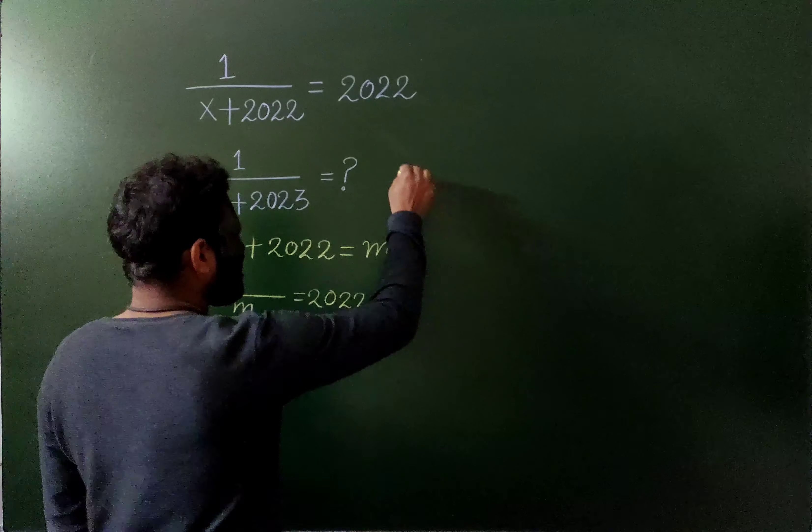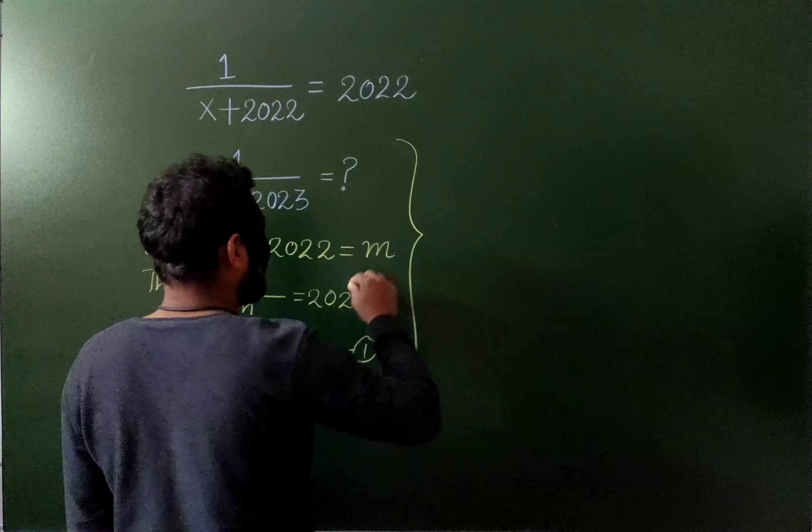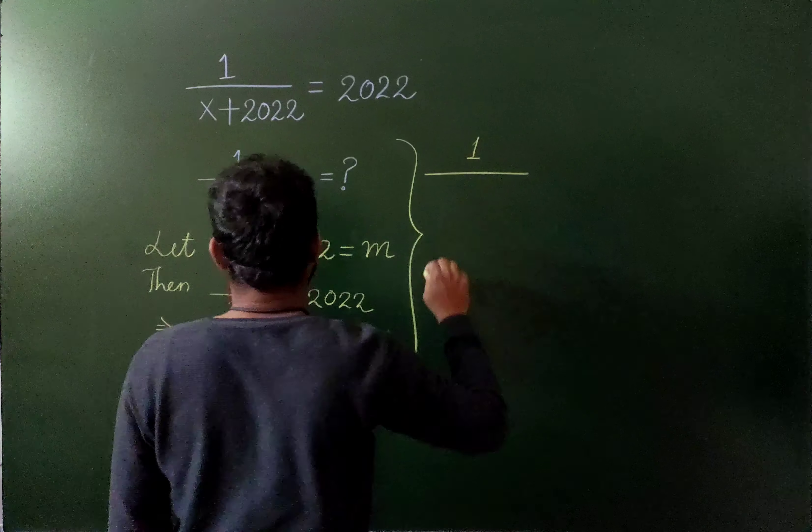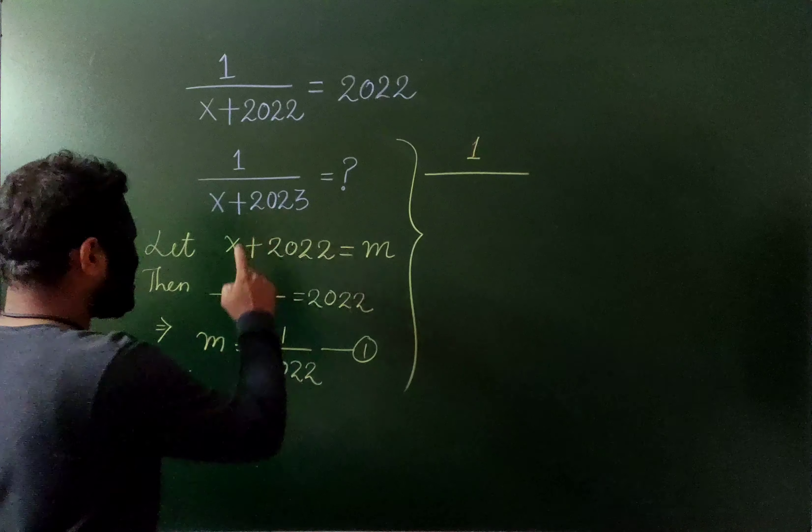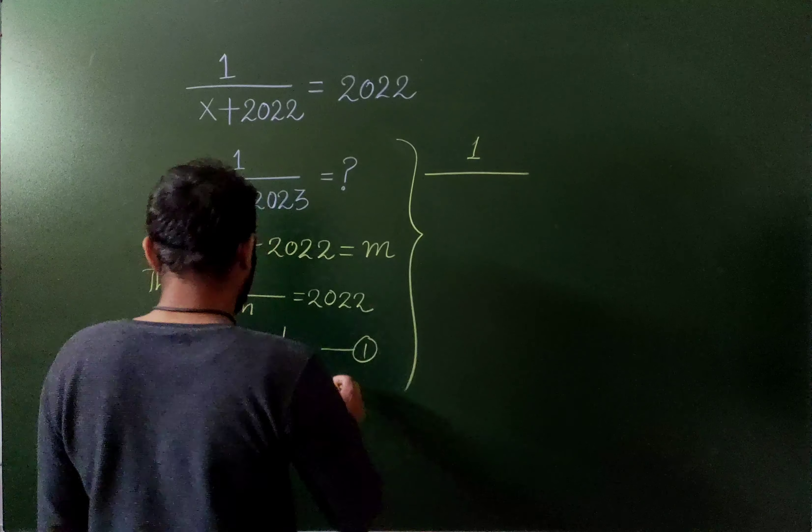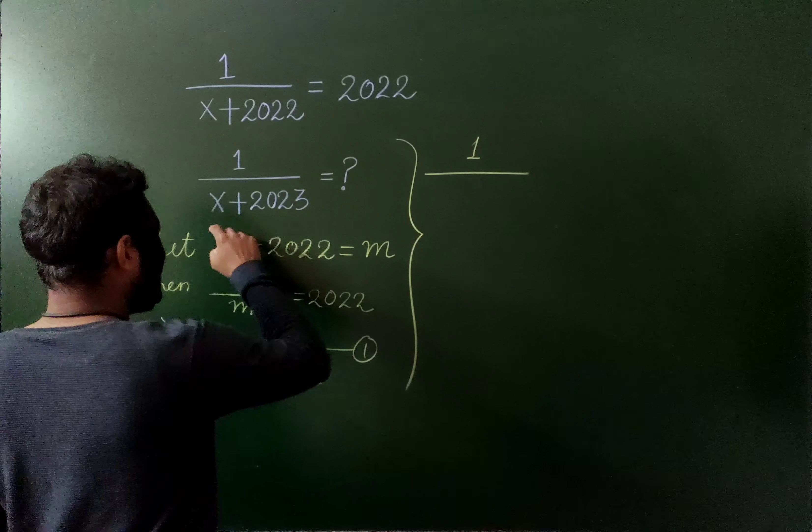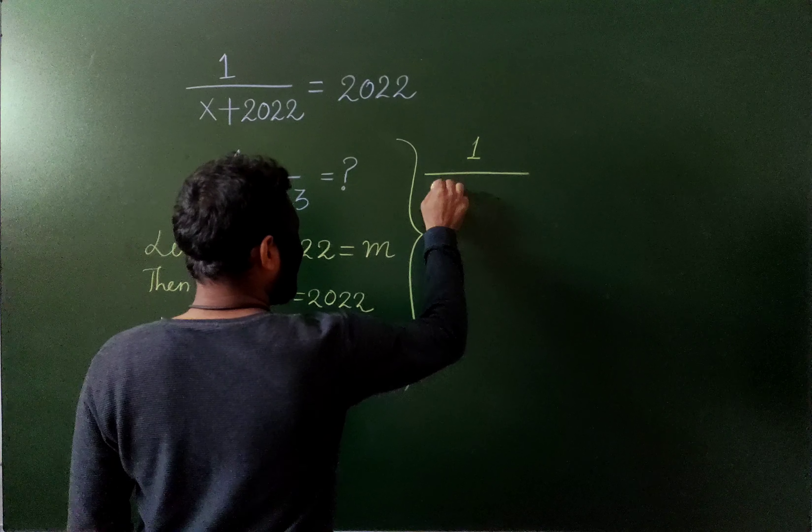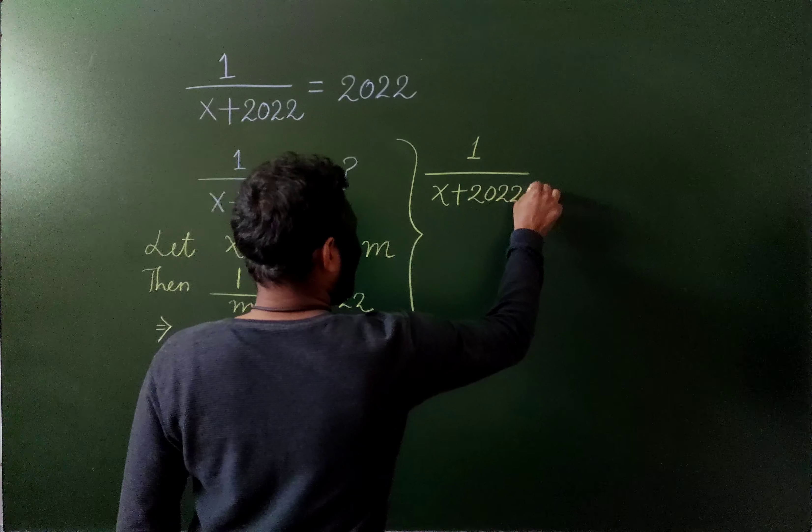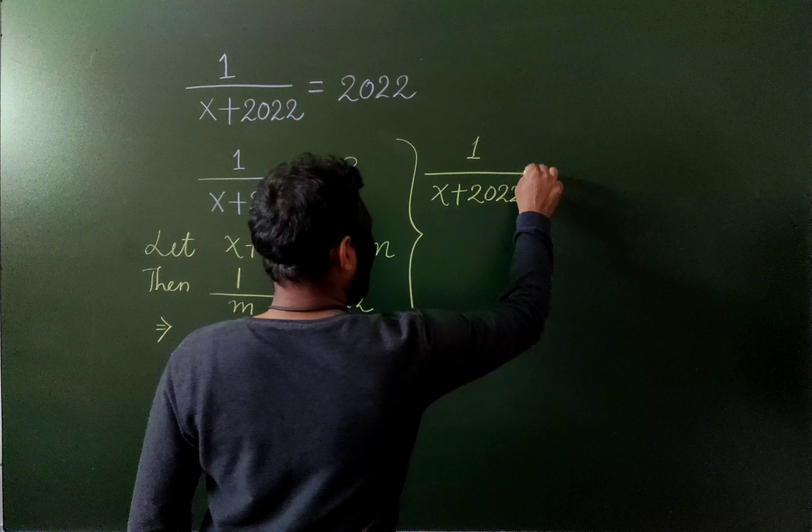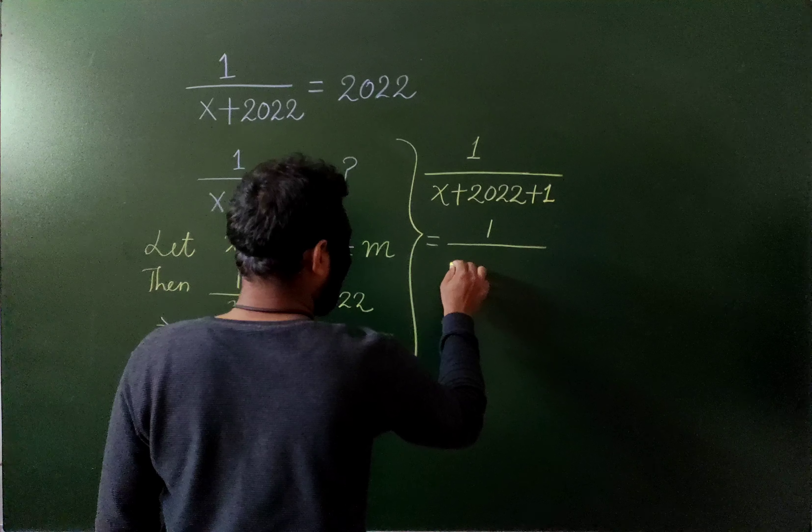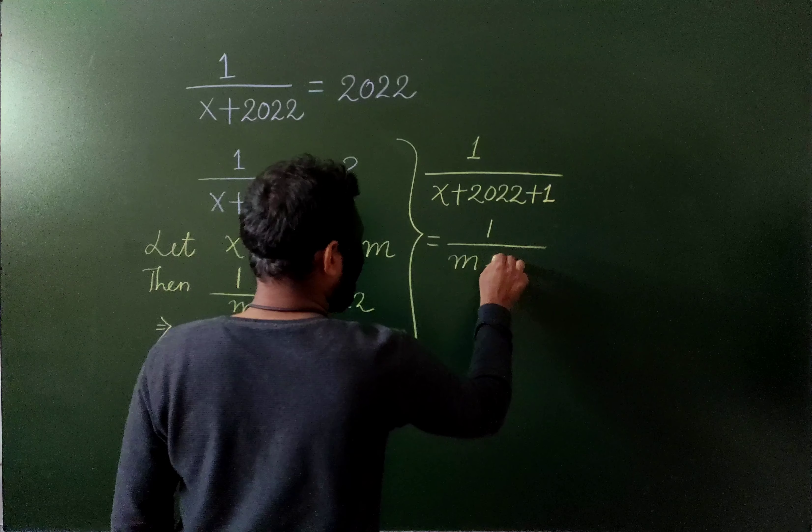Let's use this in the second equation. So this is going to be 1 by 2023, which is 2022 plus 1. So I can write this one as x plus 2022 plus 1, or 1 by m plus 1.